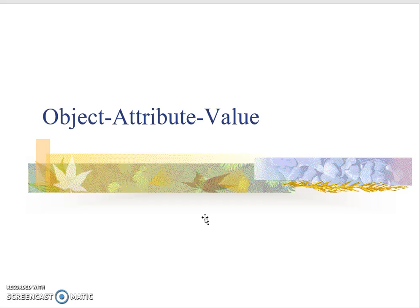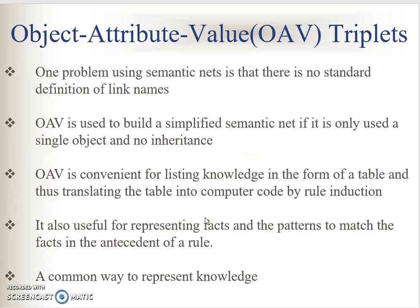So what is object attribute values? Object attribute values is a representation to overcome disadvantages of semantic network. In semantic network, we use non-standard definitions of the link names. With OAV, we can simplify the semantic net by using a form of tables. We can put everything in the tables and later translate this into computer code using the rules. We use object attribute values when objects use only single objects and no inheritance is involved.